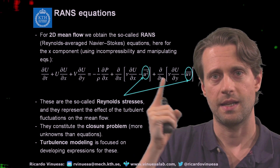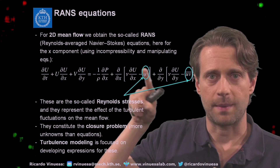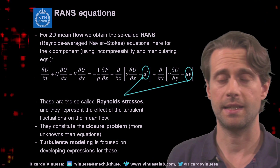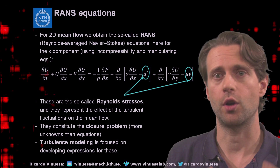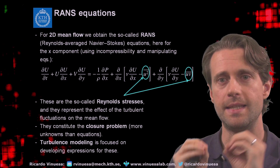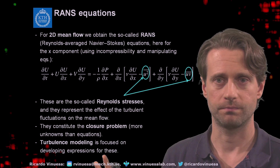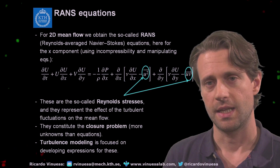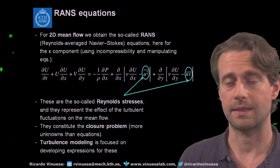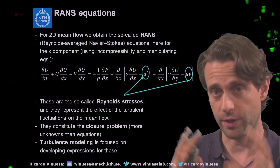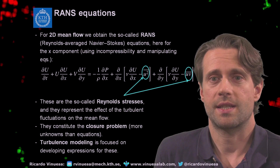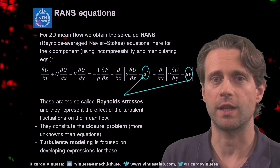These are basically the velocity fluctuation correlations, also called Reynolds stresses. And these Reynolds stresses are basically the impact of the fluctuations on the mean flow. So what I can do is try to model and calculate the evolution of our flow field for the mean. But I need to account for these terms that are the fluctuations — the Reynolds stresses.